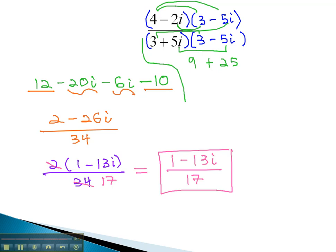Just as with regular radicals, if there is a binomial in the denominator, we clear the radical, or the i, by multiplying by the conjugate.